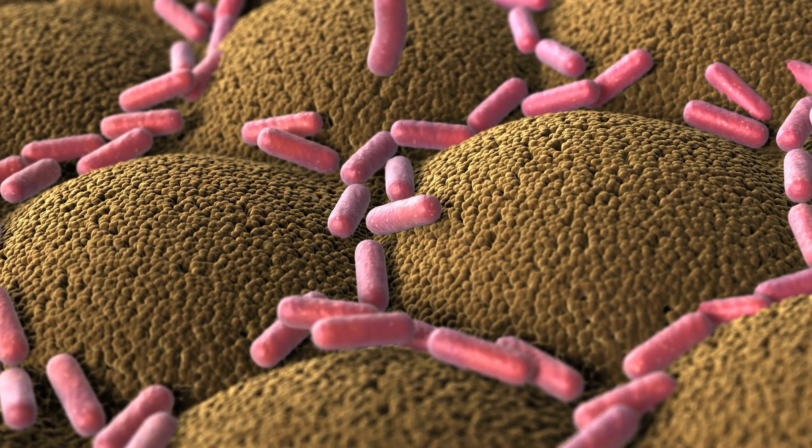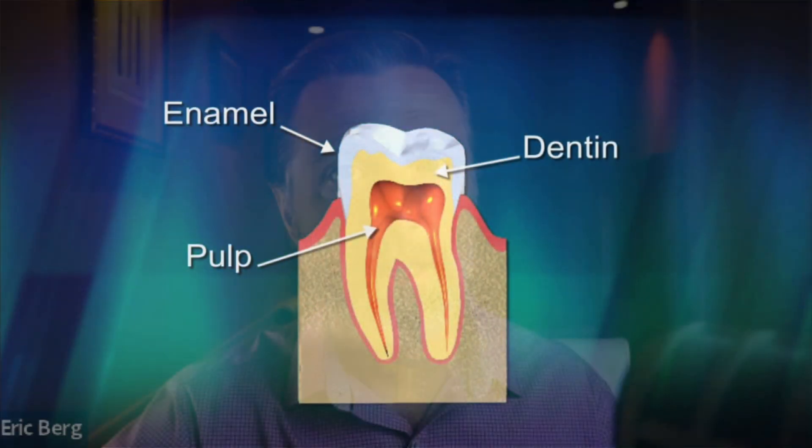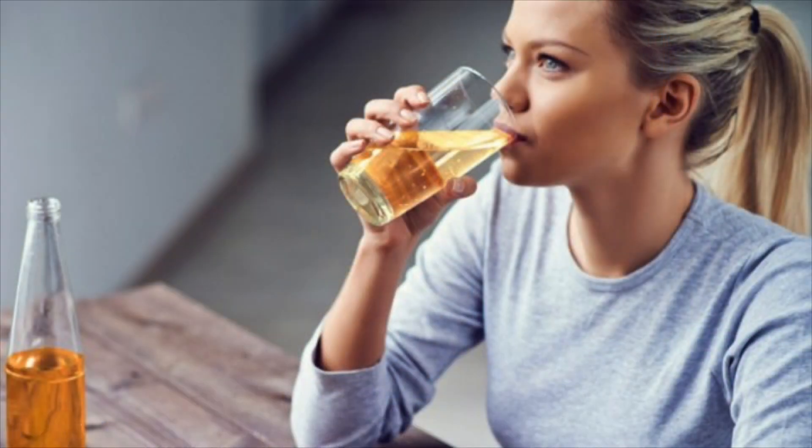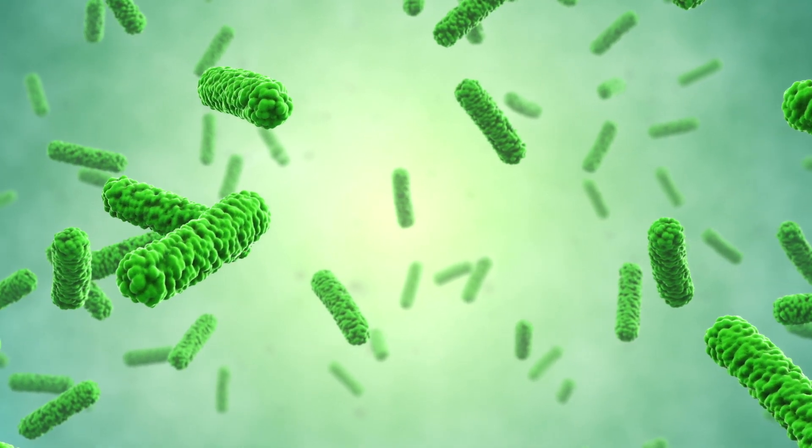The bacteria in your mouth, when fed carbs, ferment those carbohydrates and change the pH in your mouth. The bacteria can keep your pH very acidic, and bacteria are usually at the root of this dissolving of enamel. It's the carbohydrates — sugar — that make your mouth very acidic, not directly, but indirectly, because they feed bacteria that then produce acidic byproducts. The worst thing you can drink is something with acid and sugar at the same time.